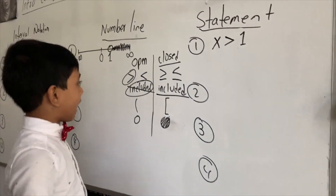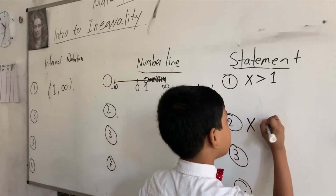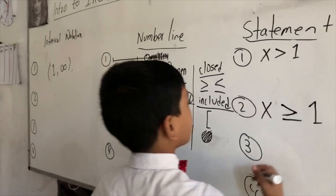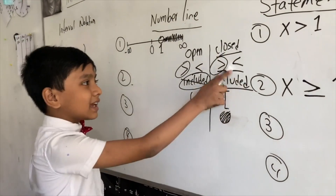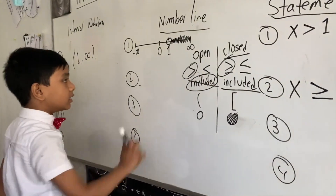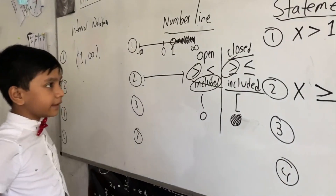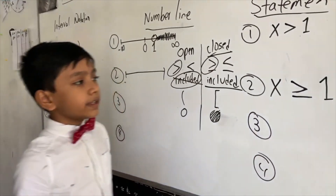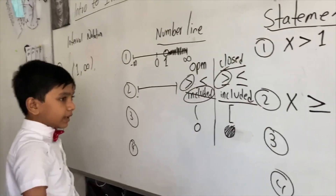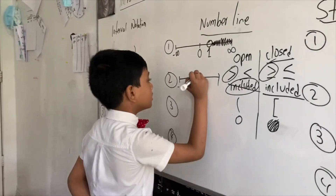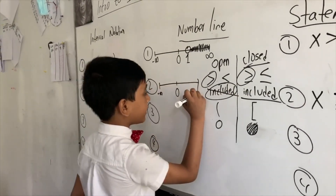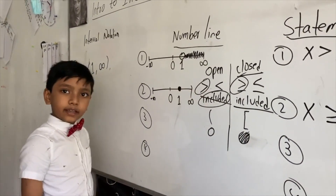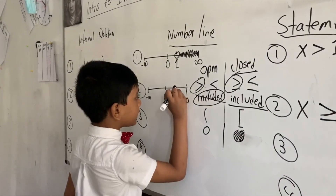Now let's look at our second statement: x is greater than or equal to one. We know this must be a closed circle statement, and one is included. One is now included in the group that x is greater than or equal to — it's included in the group.